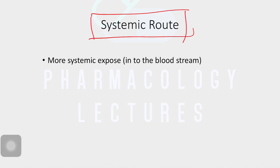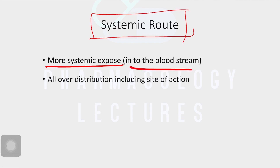In the systemic route, the main thing is more systemic exposure. For example, a local route is like applying a cream or lotion on the skin, whereas the systemic route means you are introducing the drug inside the body. It goes into the bloodstream and gets distributed all over, including the site of action.